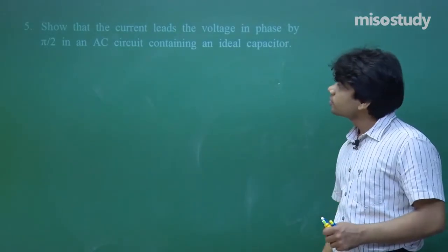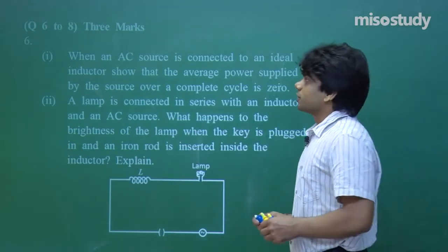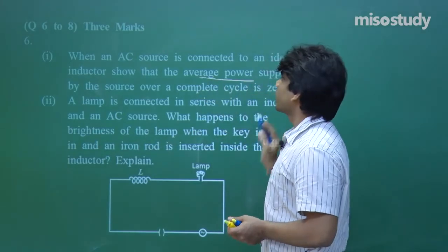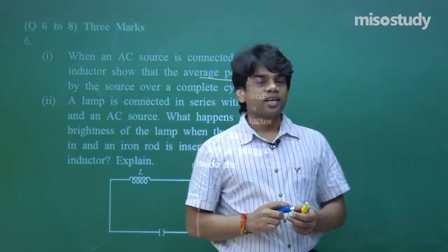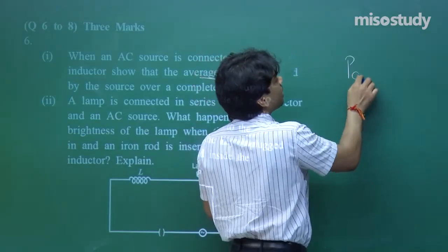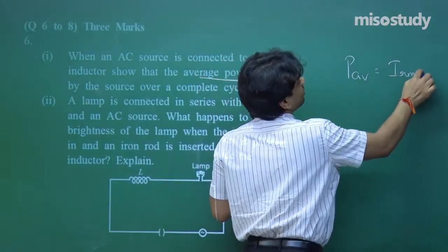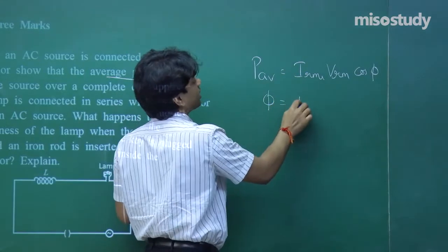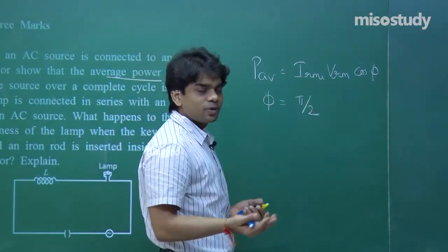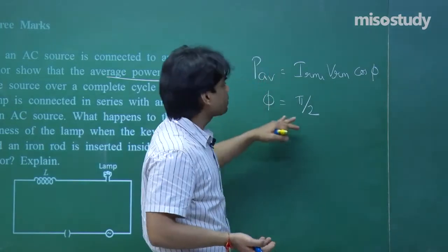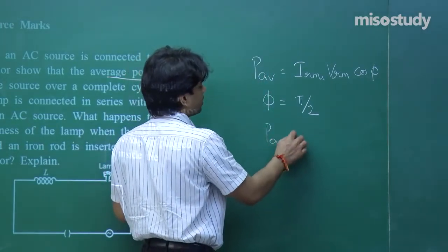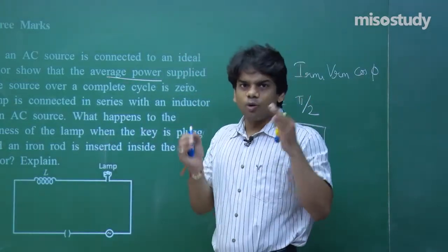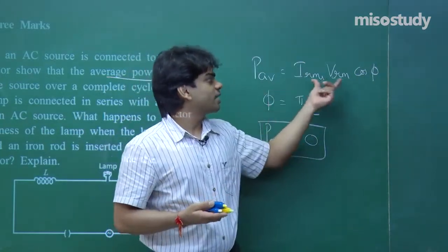Question number 6, a three-mark question: when an AC source is connected to an ideal inductor, show that the average power supplied by the source over a complete cycle is zero. In the case of an ideal inductor, P_avg = I_rms · V_rms · cos φ, where φ = π/2 for an inductor. cos(π/2) = 0, so average power dissipated is zero.